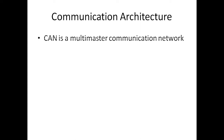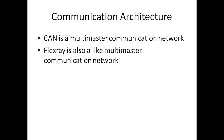What about the communication architecture? CAN is a multi-master network — there is no master-slave relationship. Everybody is master, and anybody is free to send data at any point of time if the bus is free. FlexRay is also a multi-master communication network. Here also, there is no master-slave network, and anybody with data to send can send it.